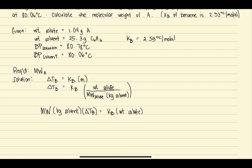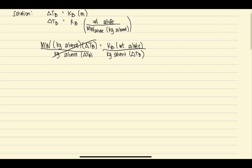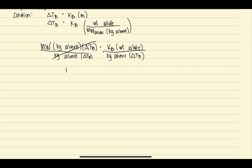Then divide both sides by kilograms of solvent times the change in boiling point. We cancel those terms, leaving molecular weight isolated. Now we need to substitute our given values into our derived formula.